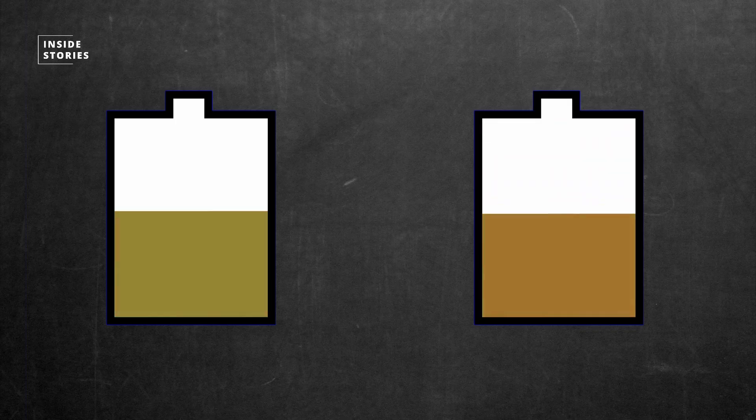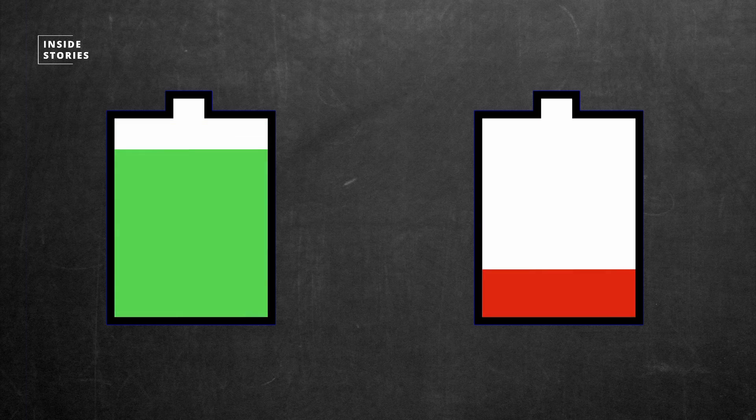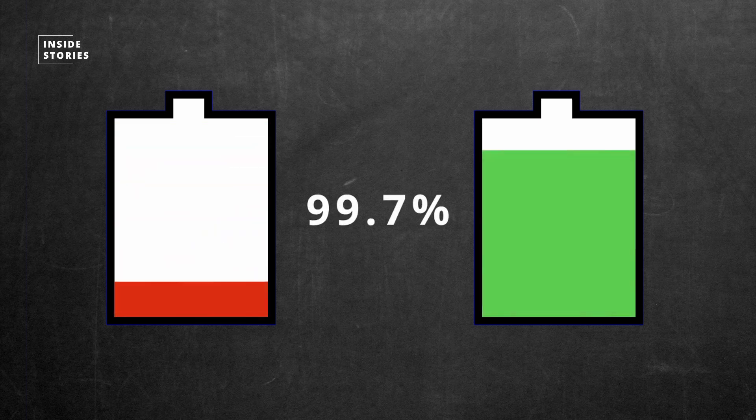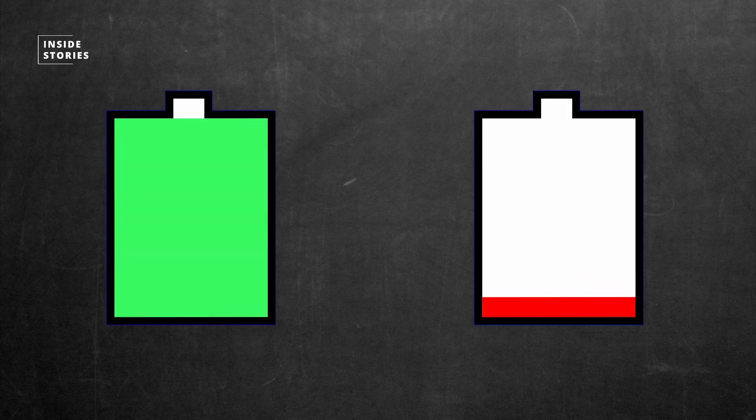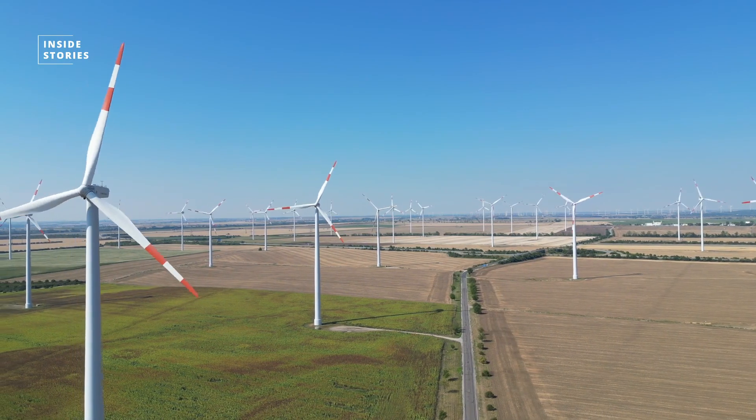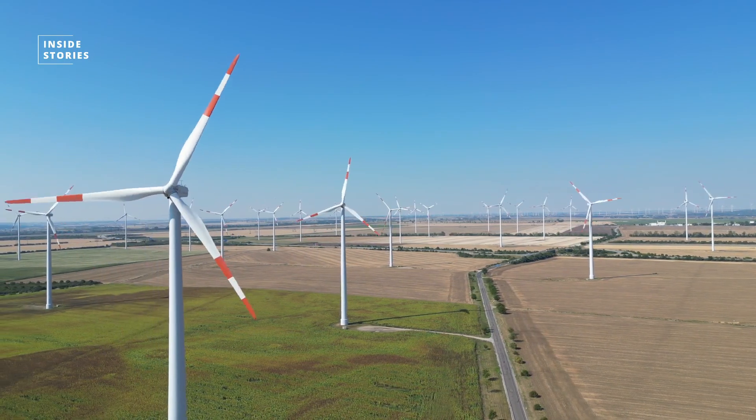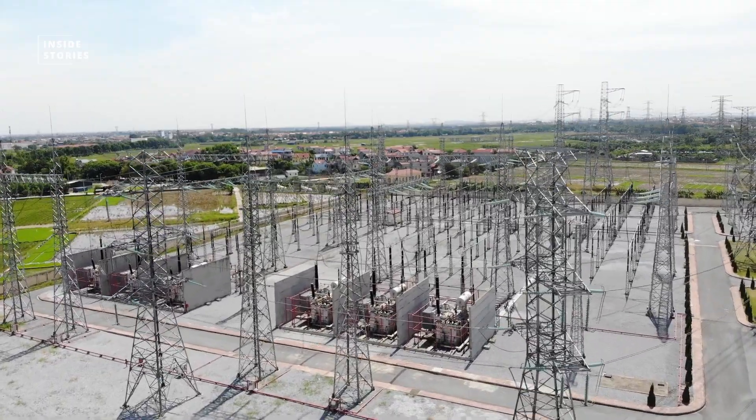According to the researchers, the battery now has an energy efficiency of 99.7% after 1000 charging cycles, making it extremely promising and a viable option for storing wind and solar generated energy for transmission to power grids.